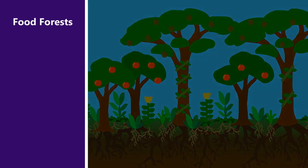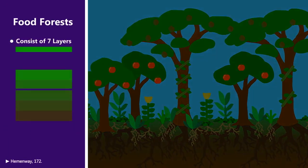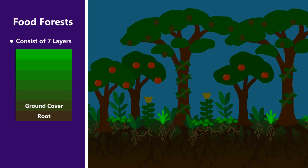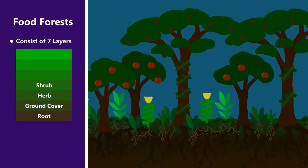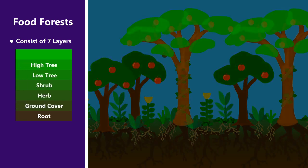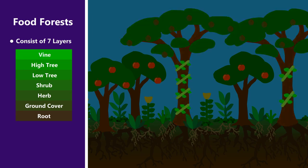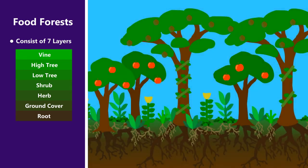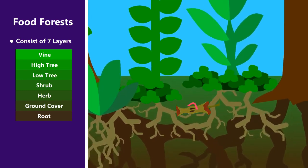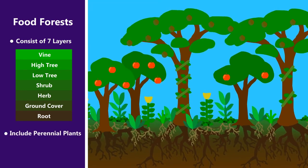Food forests are often thought of as comprising seven layers. The root layer, the ground cover layer, the herb layer, the shrub layer, the low tree layer, the high tree layer, and the vine layer. Every one of these layers either produces some sort of food or medicine or is in some way helpful to the system as a whole. The plants are mostly perennials and include as many native species as possible.